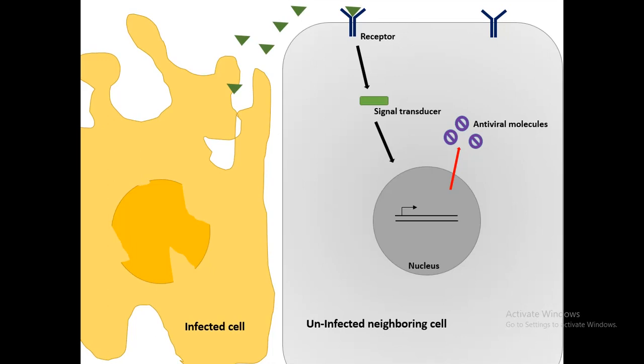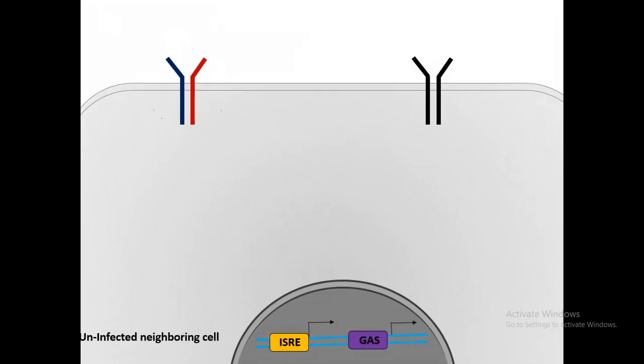So when the cell dies, before it dies, it sends the interferons. And the interferon-mediated signaling produces antiviral defense mechanisms which would prevent viral assembly or viral propagation.